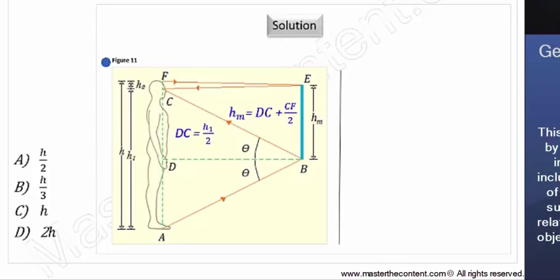Additionally, the height of the top portion of the mirror, that being half the length of CF, is equal to one half of H subscript 2, the height from eye level to top of your head.